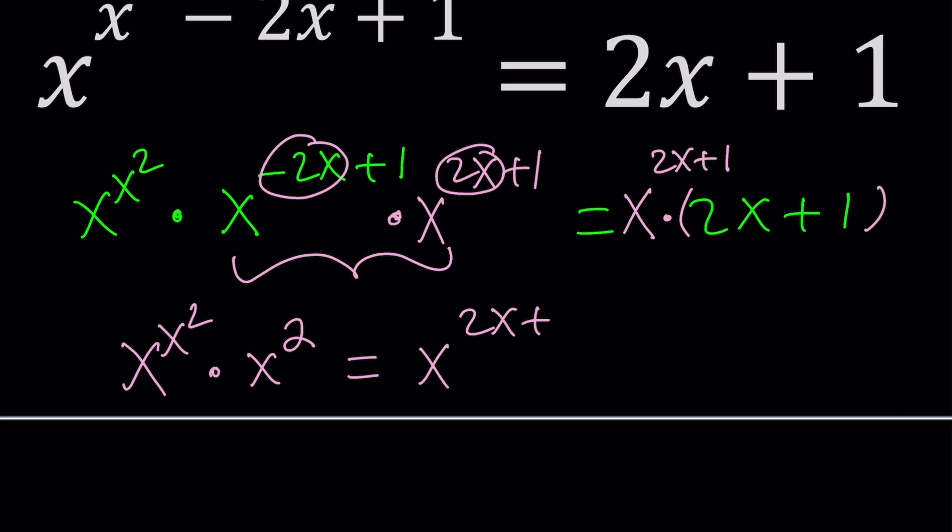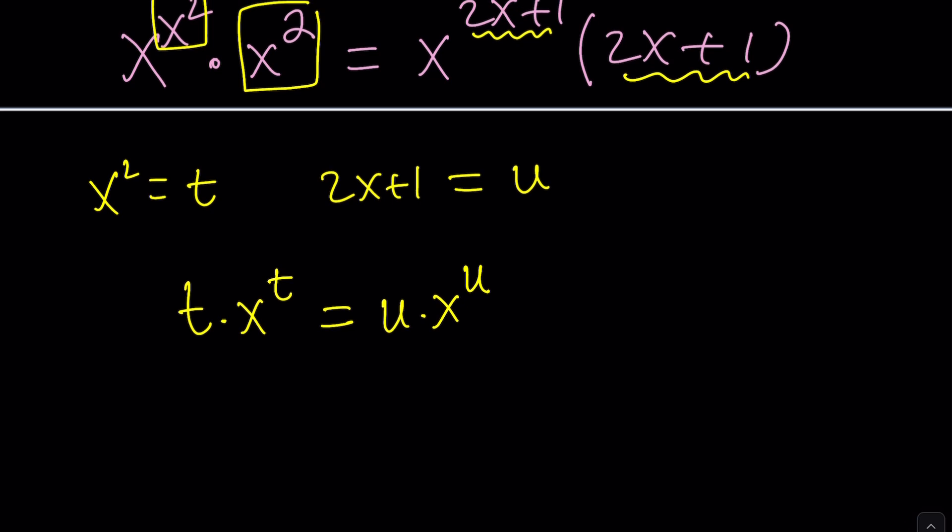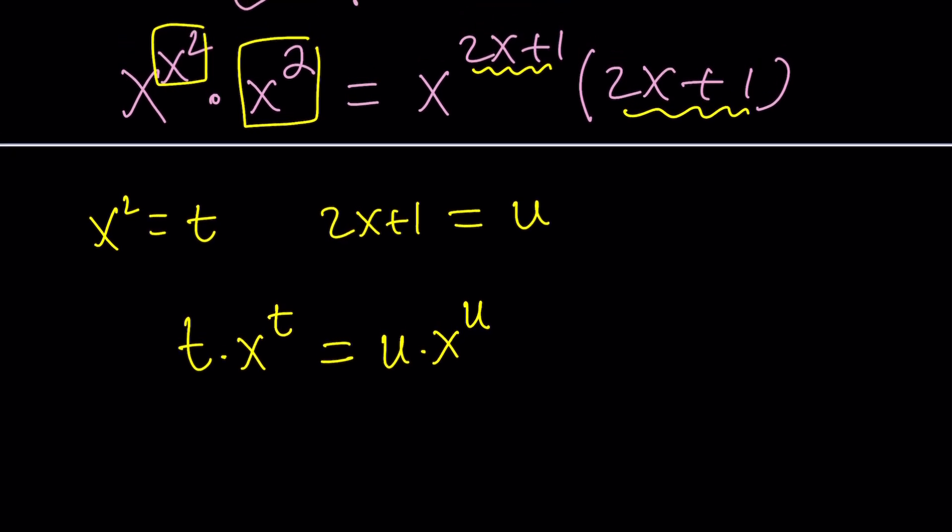Because if you take a look at this very carefully, you should realize something. Do you see what I'm talking about? I have x squared and then x to the power x squared, and I have something times x to the power something. So here's how we can do it. This is x squared and this is x to the power x squared. And this is 2x plus 1 and this is x to the power 2x plus 1. So what is that supposed to mean? And if you don't see what I'm talking about, you can also use substitution. For example, suppose x squared is equal to t and 2x plus 1 is equal to u. Then we get something like this: t times x to the t equals u times x to the u. Do you see what I'm talking about? That's the type of pattern we're talking about. And when do we see these kinds of patterns? With a very special function. What is that called? Lambert's W function.